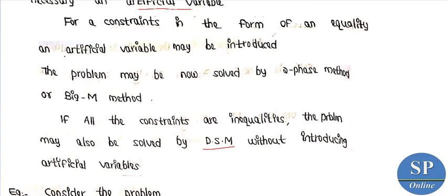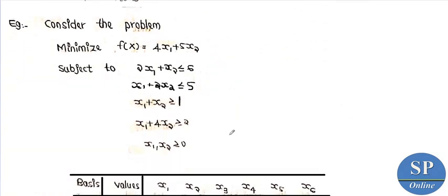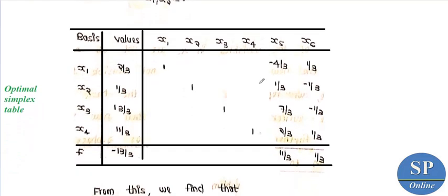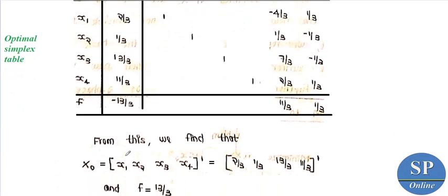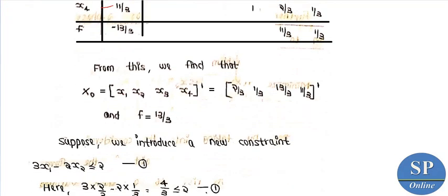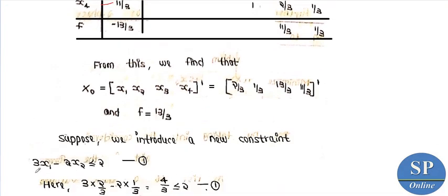Now, consider the same problem solved in the previous section: minimize f of x equal to 4x1 plus 5x2, subject to 2x1 plus x2 less than or equal to 6, x1 plus 2x2 less than or equal to 5, and non-negativity constraints. The optimal solution from the simplex table is: x1 equal to 2/3, x2 equal to 1/3, x3 equal to 13/3, x4 equal to 11/3, and f equal to 7/3.